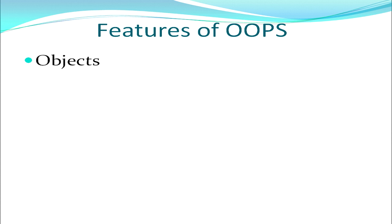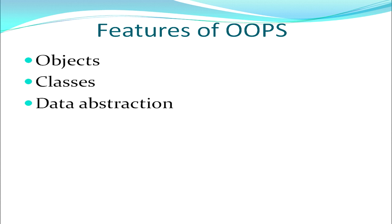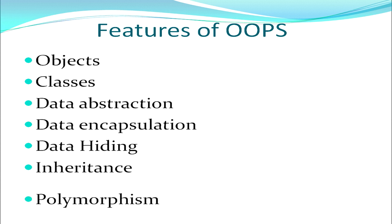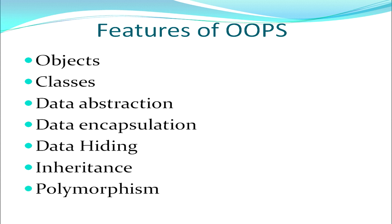The various features associated with object oriented programming are: objects, classes, data abstraction, data encapsulation, data hiding, inheritance, and finally polymorphism. All these constitute the basic features of OOP, and we will be covering all these features one by one.